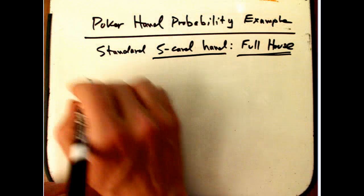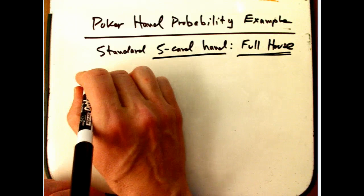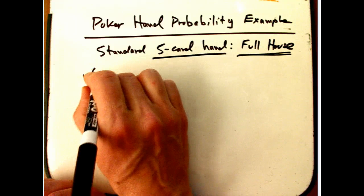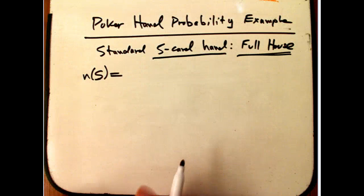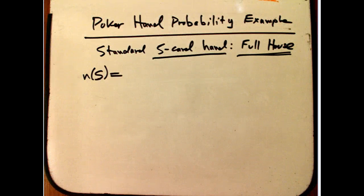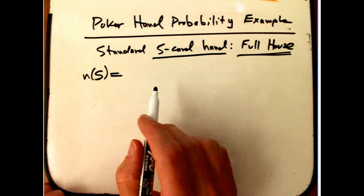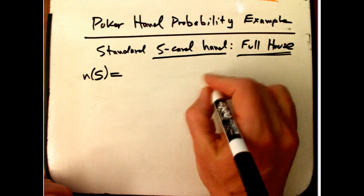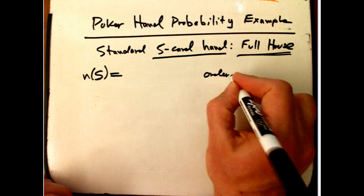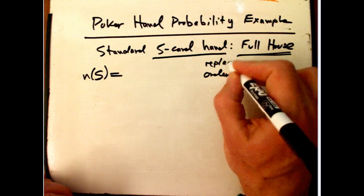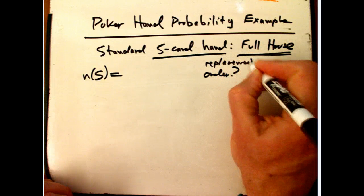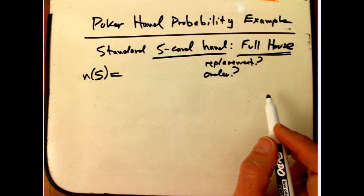First, we want to figure out how many outcomes are in the sample space. This dominates most probability problems when you're doing anything with counting. Always ask the two fundamental questions: are you counting with order? And really you should ask about replacement first, because that influences whether you should use order or not.